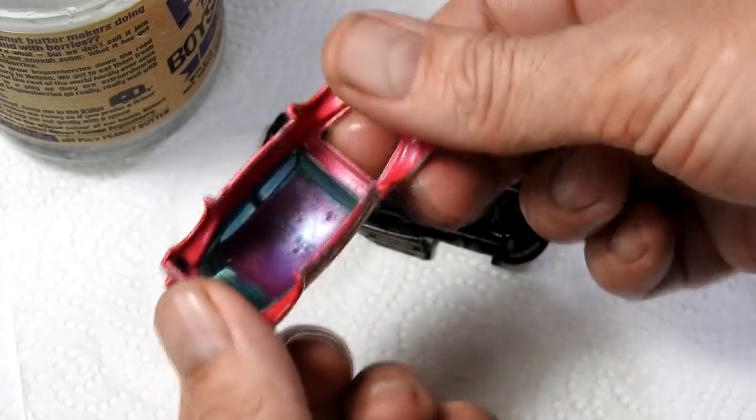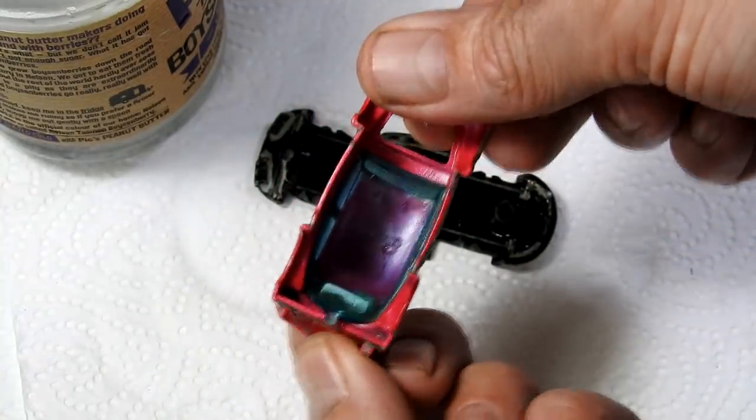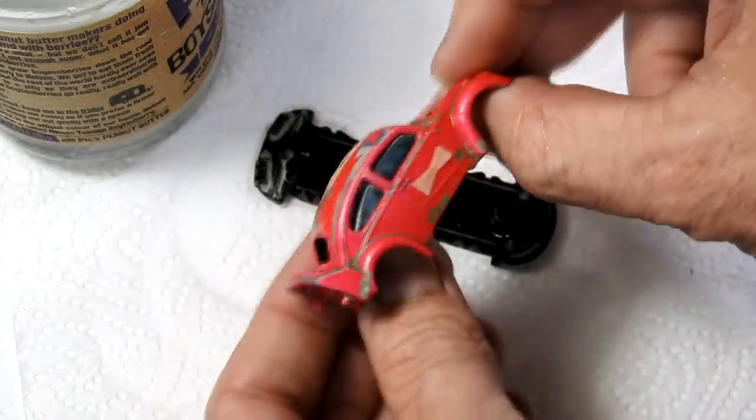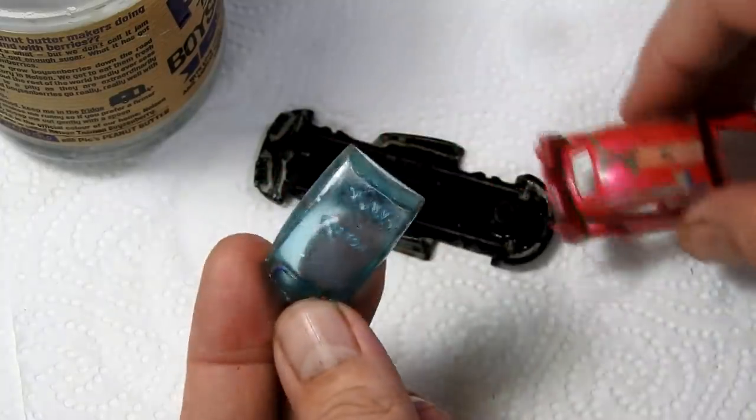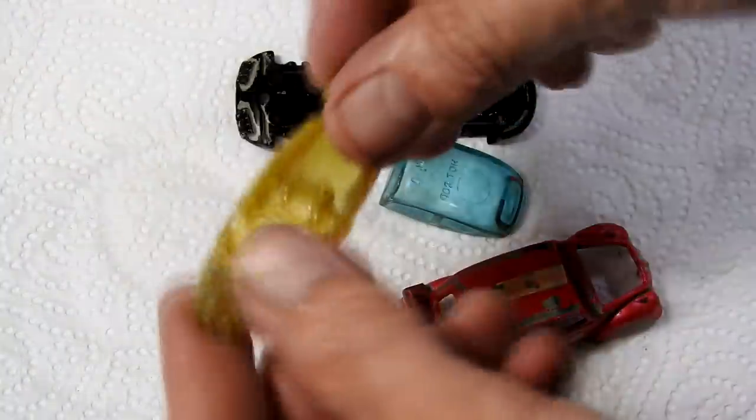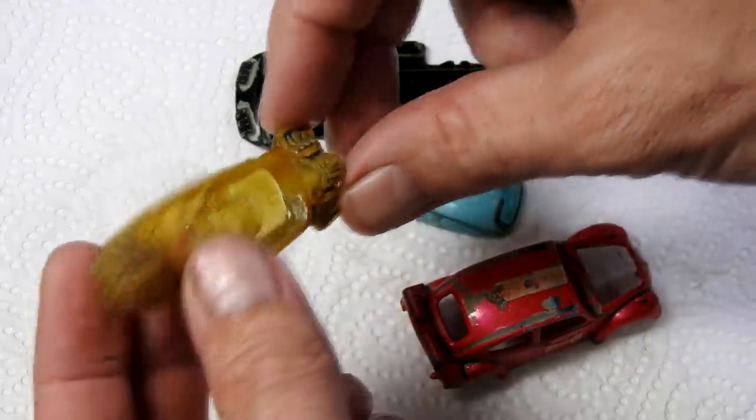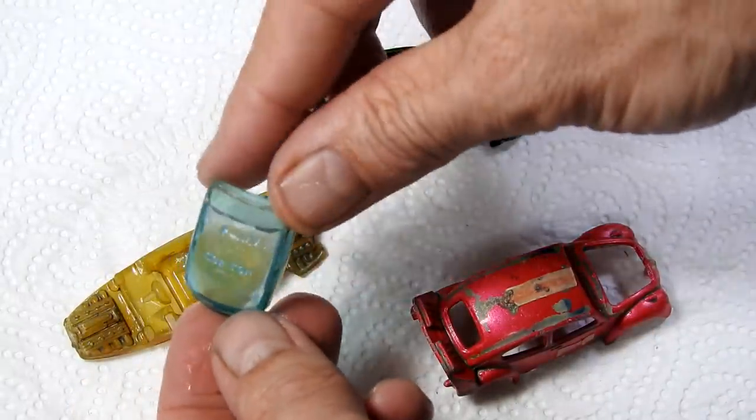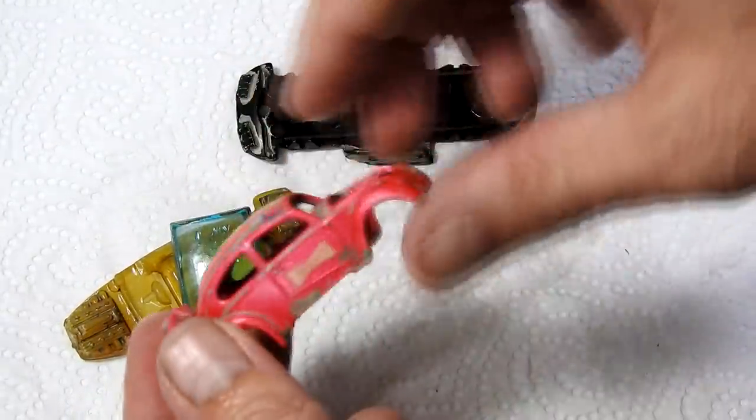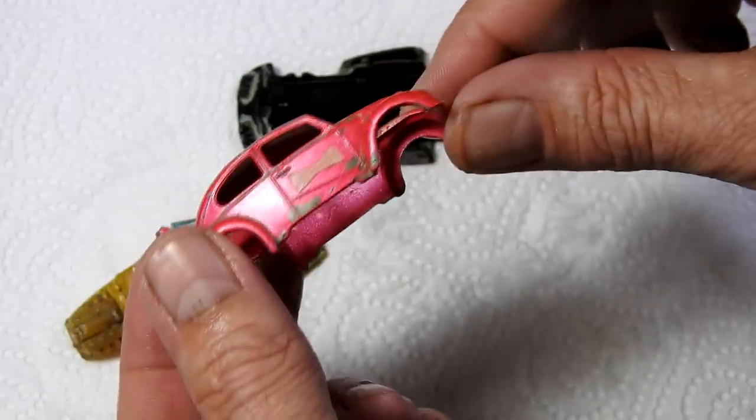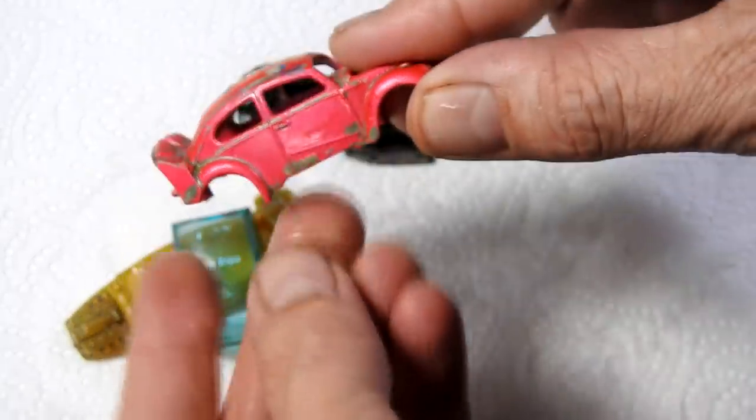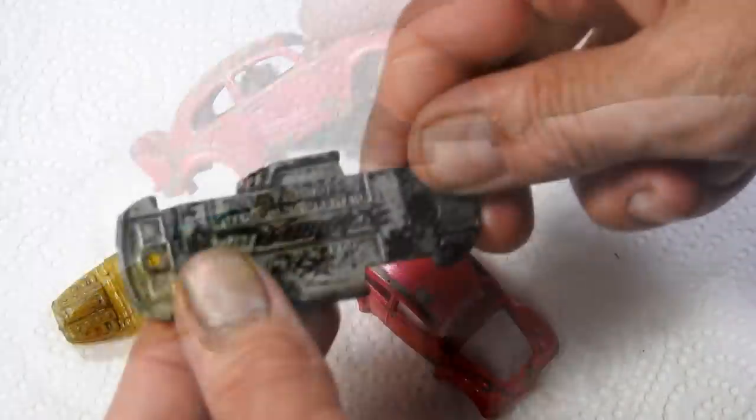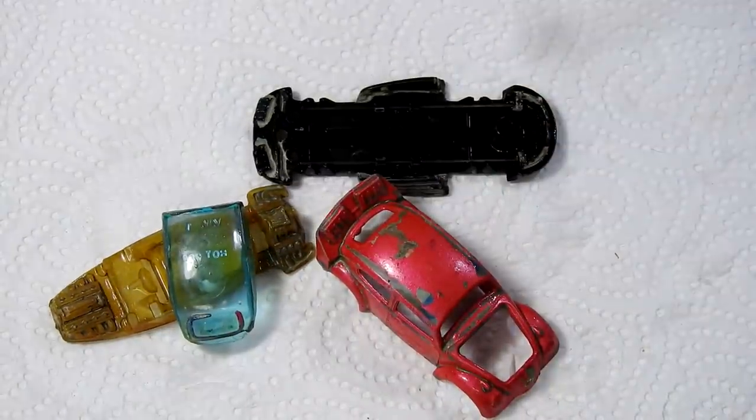And I'll give them a good rinse off. Here is the body. I can pop that windscreen out of there now. There's the chrome has come off of the interior there. Most of the paint's come off of the windscreen. And all of that silver paint has come off the body here, revealing the original paint. It's almost untouched, including the stickers.